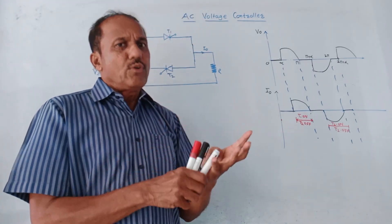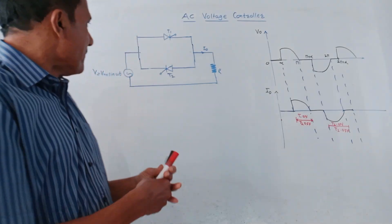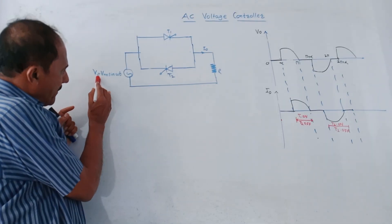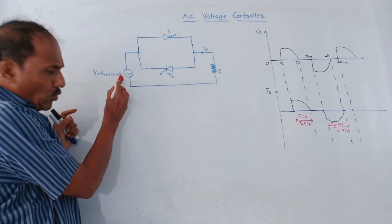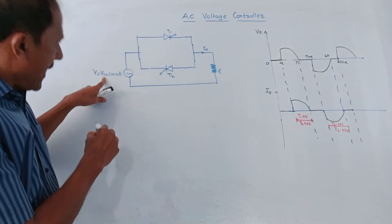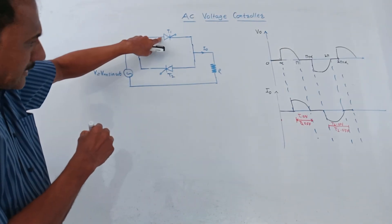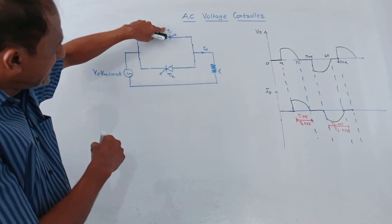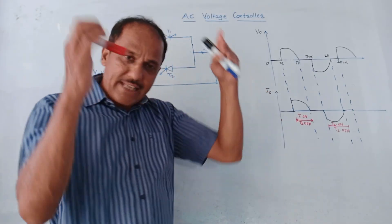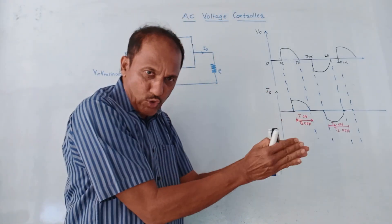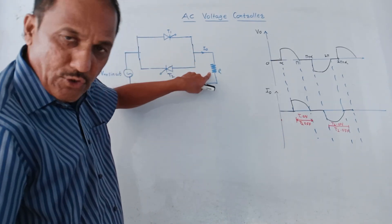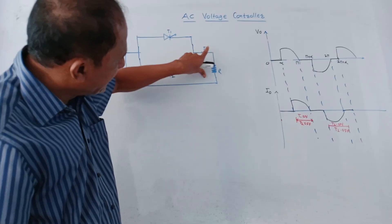We are talking about a single phase full wave AC voltage controller. This is the corresponding circuit diagram. At the input side we are applying V = Vm sin(ωt), a pure sinusoidal waveform having amplitude Vm. We are considering two SCRs, that is two thyristors T1 and T2. R is the load connected at the output side — across R we measure V0, the output voltage, and I0, the output current.